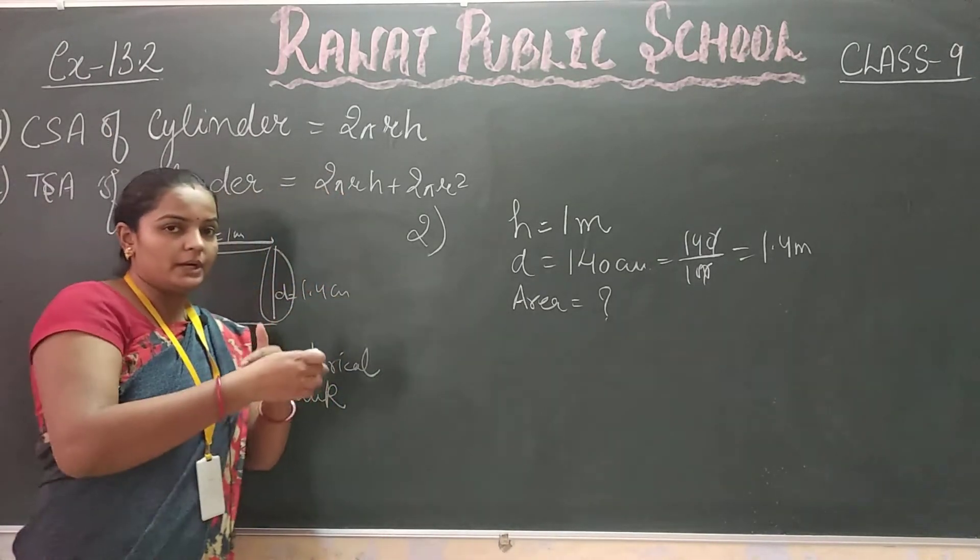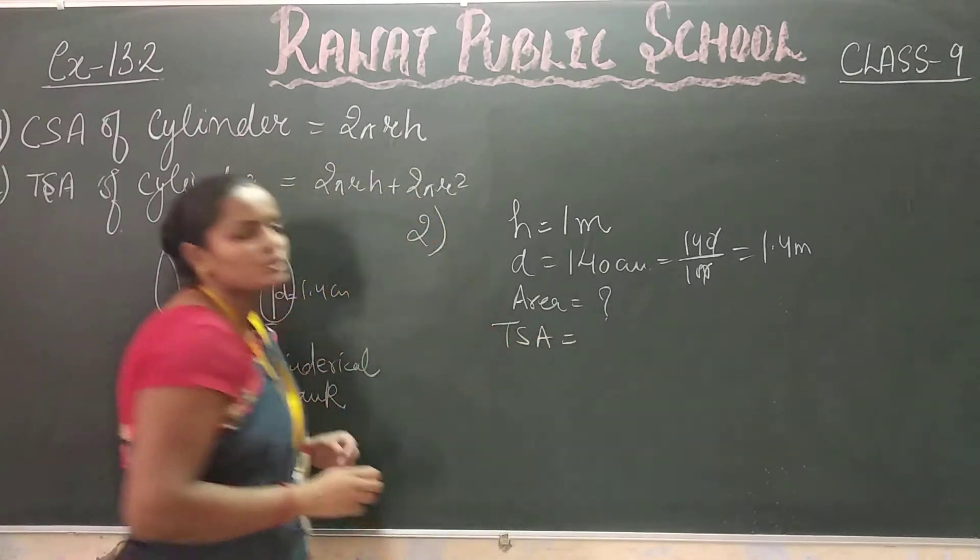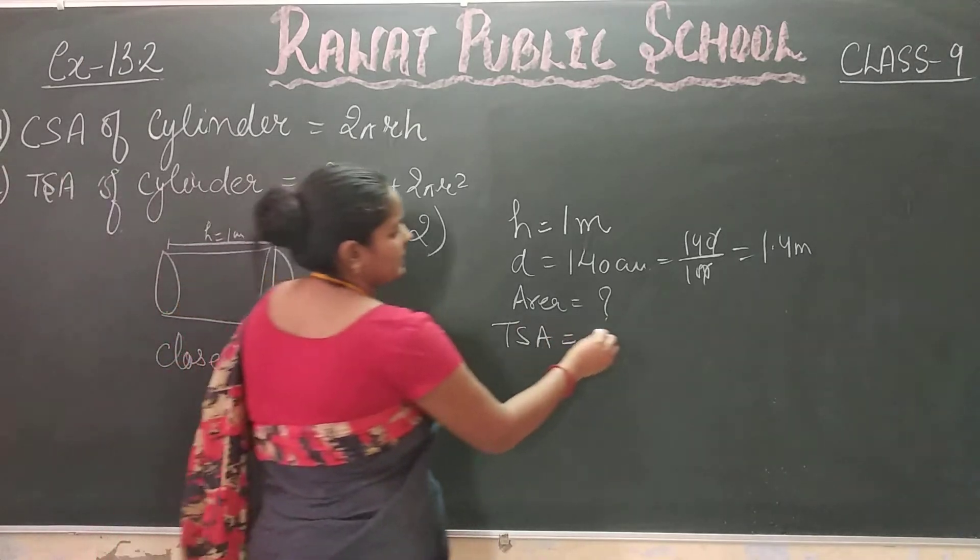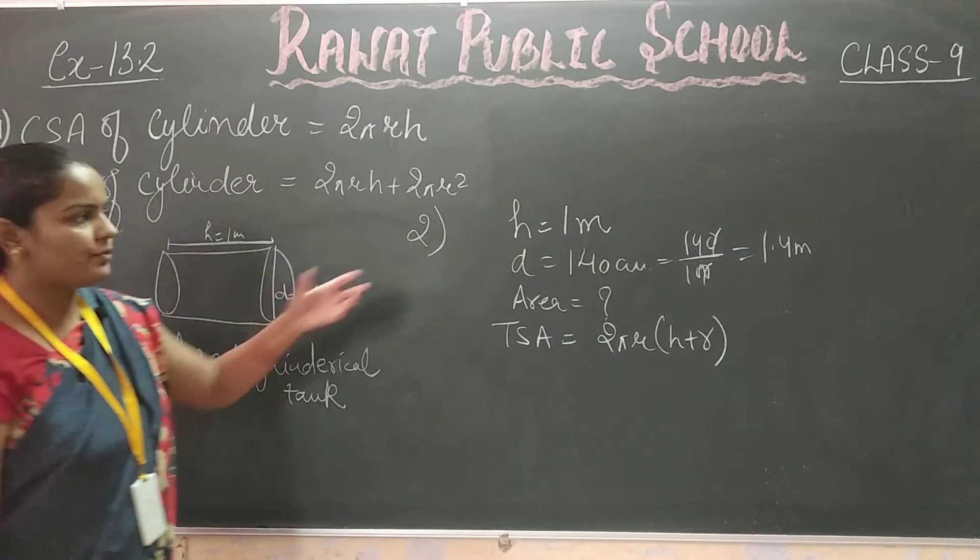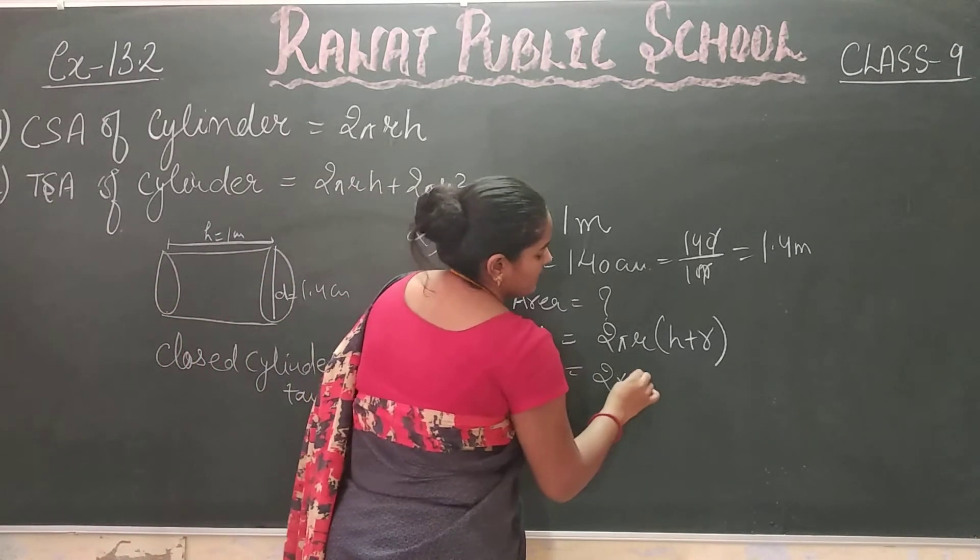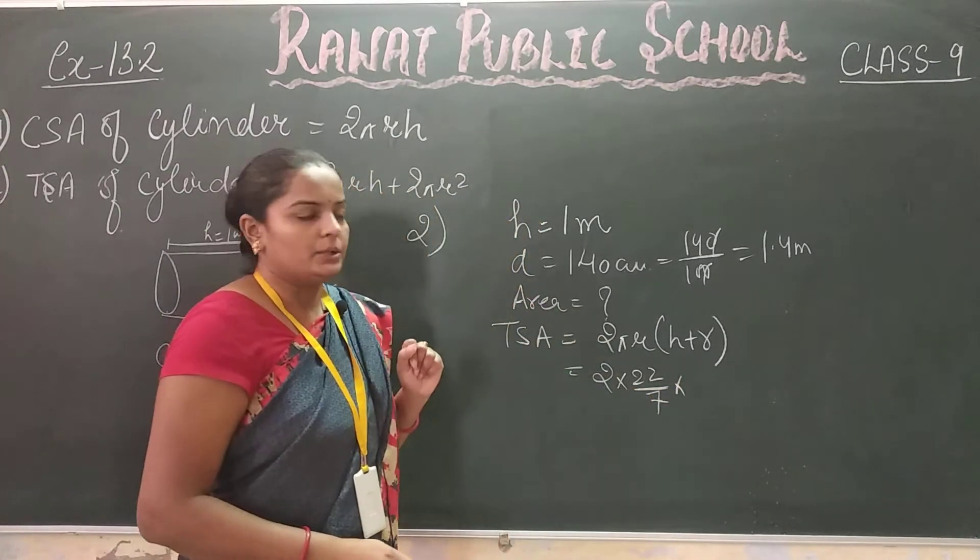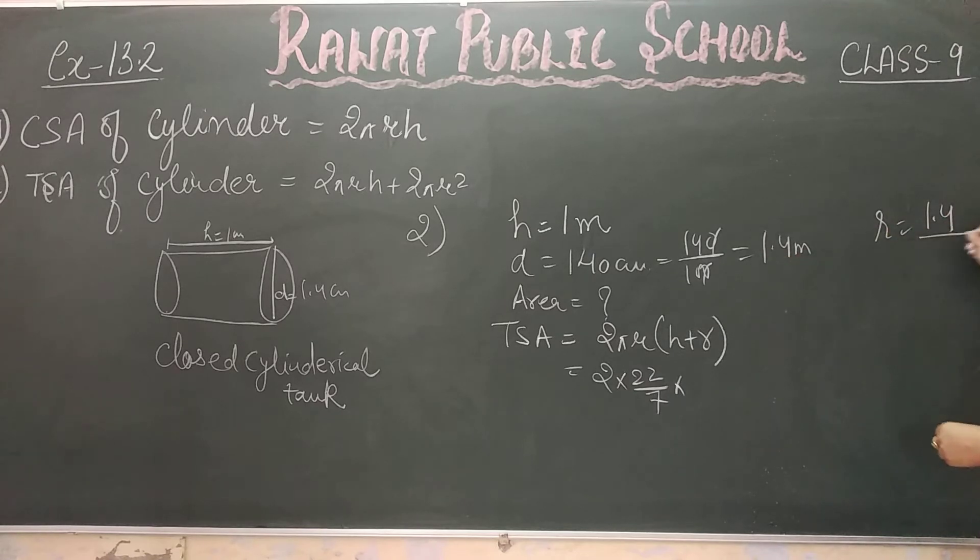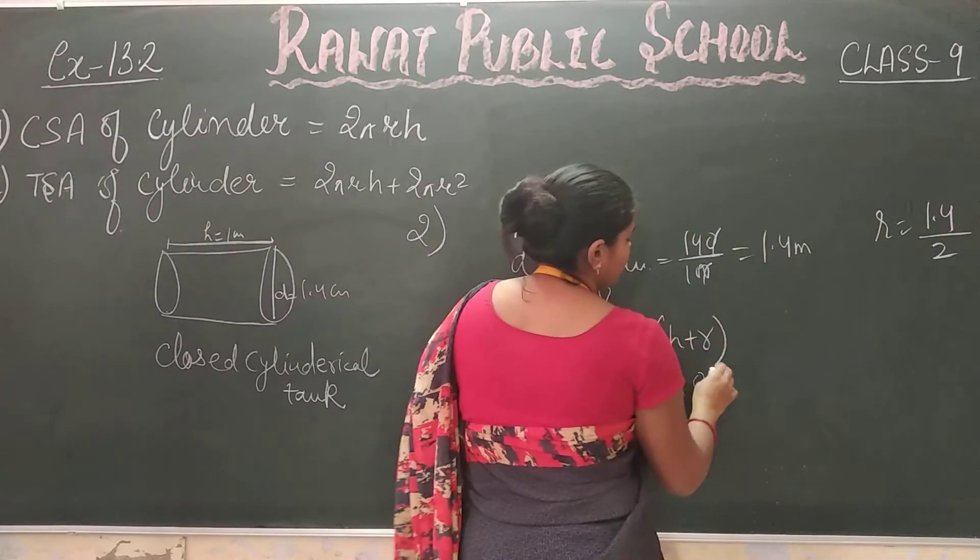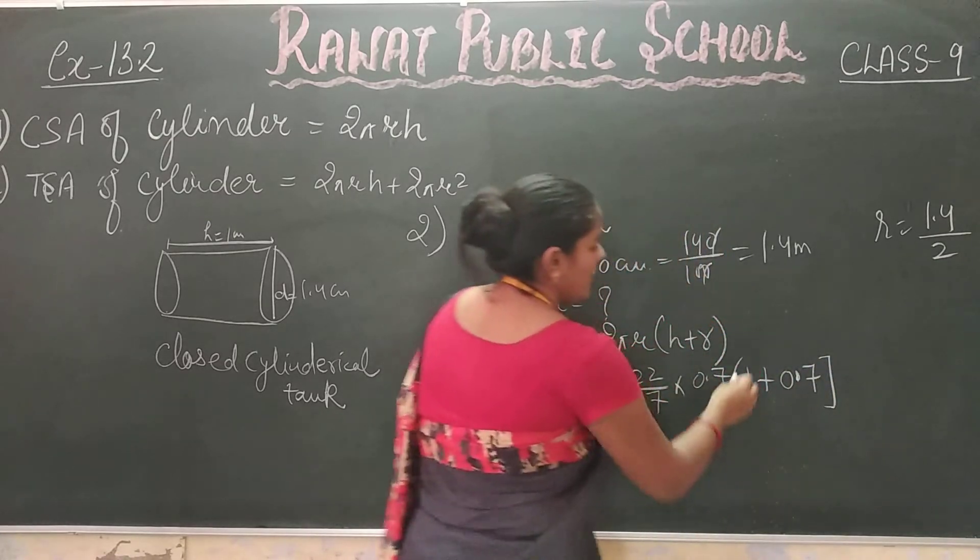Total surface area of cylinder is 2πr(h + r). Using the values: 2 times 22/7, where r equals diameter divided by 2, so r equals 1.4 divided by 2 equals 0.7 meters. And h plus r equals 1 plus 0.7.